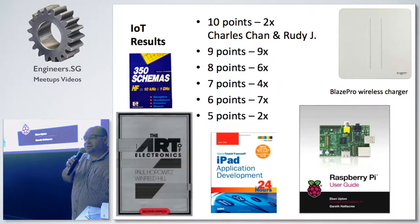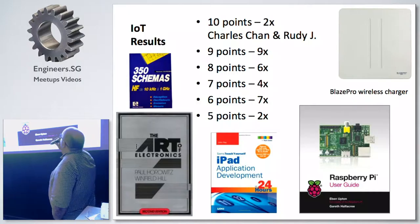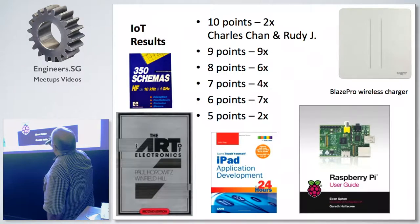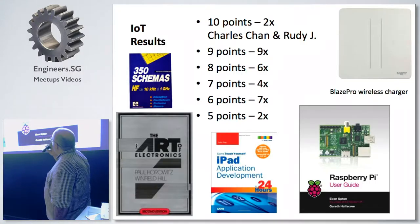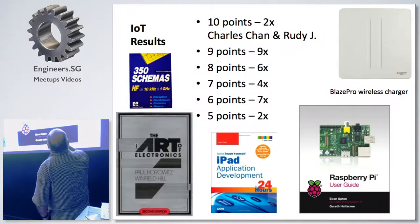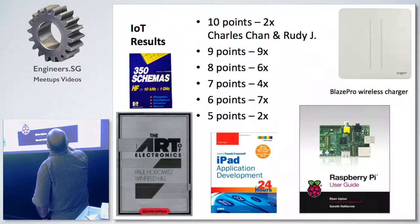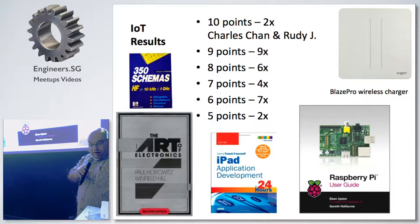Results of the IoT quiz. Two people: one person called Charles Chan, and the other one called Rudy J. Are those two here? No? Okay, so they have 10 points. The rest is pretty much 9 people have 9 points, et cetera.